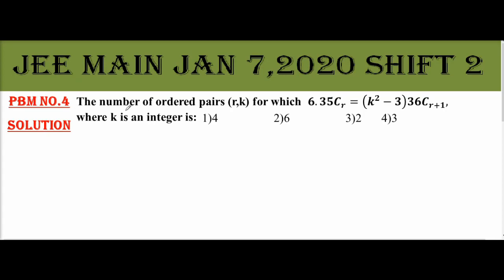Problem number 4. The number of ordered pairs r,k for which 6 into 35Cr equals k square minus 3 into 36C(r+1), where k is an integer is. The question is, 6 into 35Cr equals k square minus 3 into 36C(r+1). This is the question.